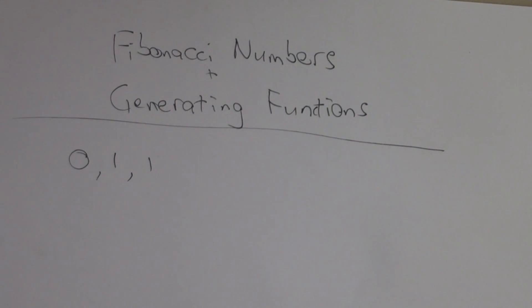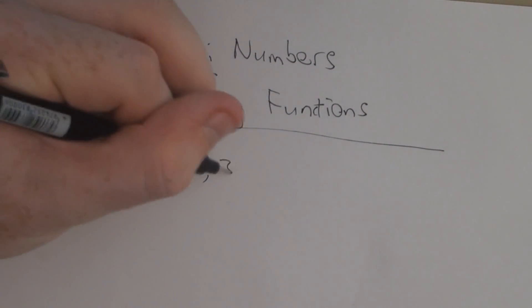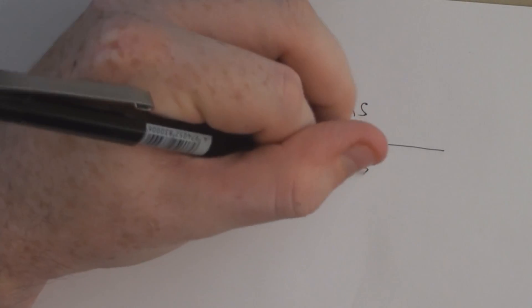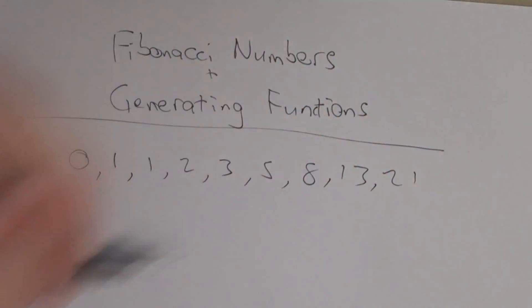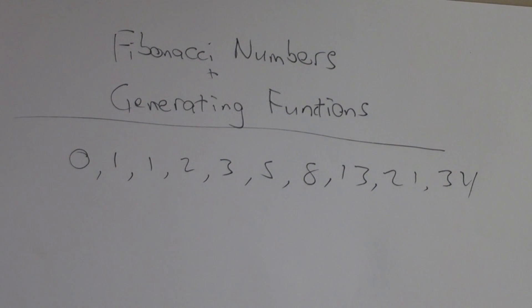So zero plus one is one. Now one plus one is two. One plus two is three. Two plus three is five. Three plus five is eight. Thirteen, twenty-one, and thirty-four. And it just goes nuts from there, right? It grows very quickly. Not too quickly, but quickly.